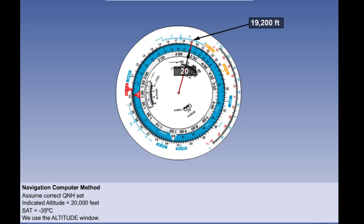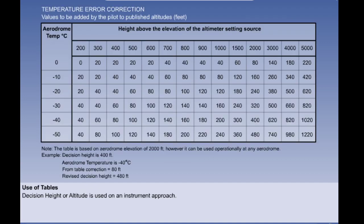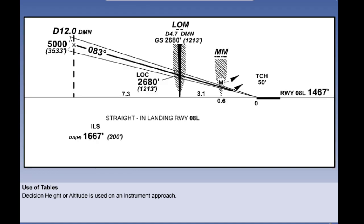Get your navigation computer out and repeat this scene as often as you need to. Be sure that you are completely confident with this operation before moving on. There is also the table method, for use with the decision height or decision altitude. Decision height or altitude is used on an instrument approach. These are usually associated with cloud or fog where the runway may not be visible until a late stage. If we cannot see two bars of lead-in lighting, we cannot continue the approach. The point at which we make that decision can be either a height or an altitude and, except for aircraft equipped with autoland, is based on the pressure altimeter.